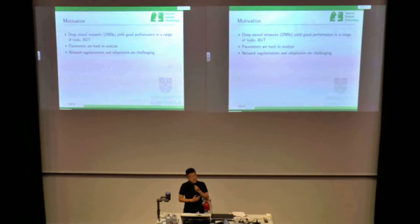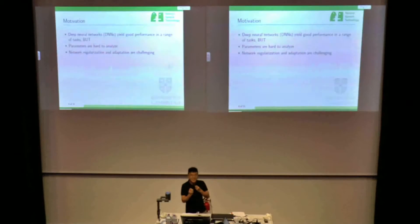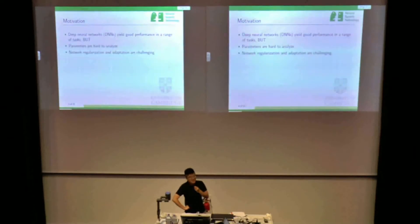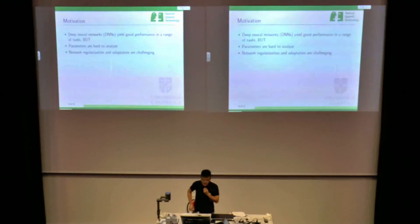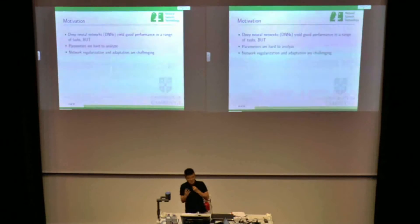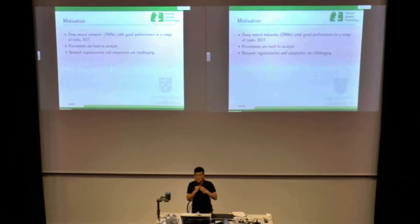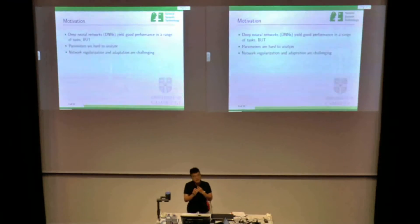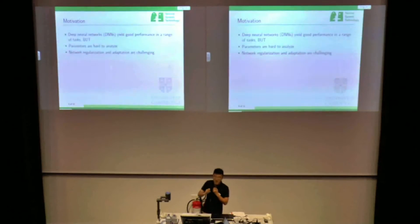Almost all the people in this room focus on neural network models in this era, and the DNN is really a good model which gives good performance in a variety of tasks. But there are some problems. Because DNN is usually used as a black box — we put in the input feature and get the prediction — the internal behavior of the neurons and the DNN parameters are hard to analyze.